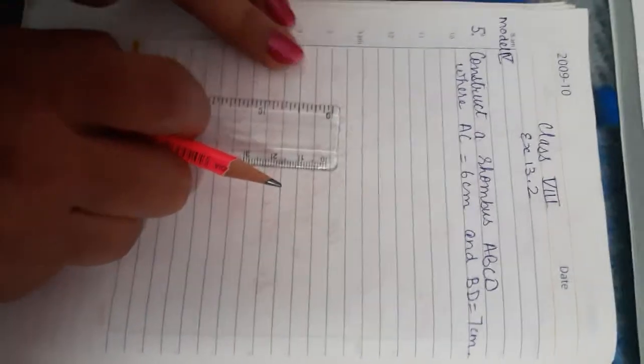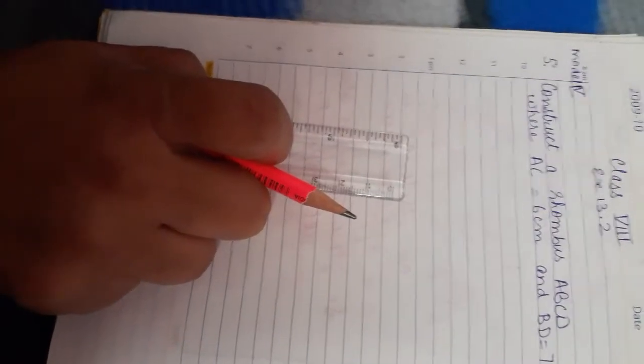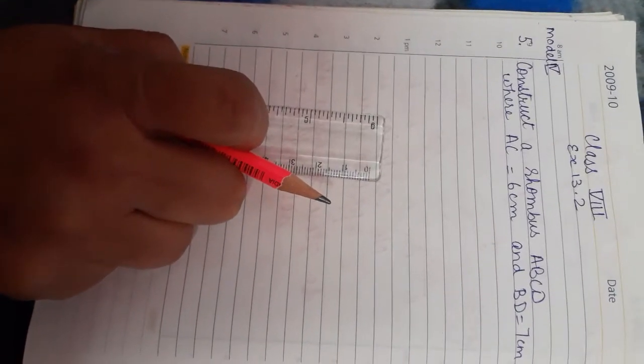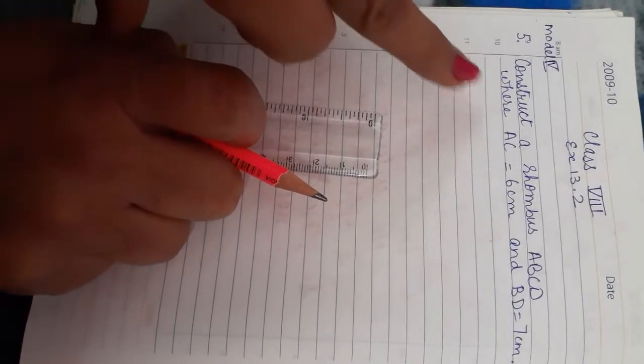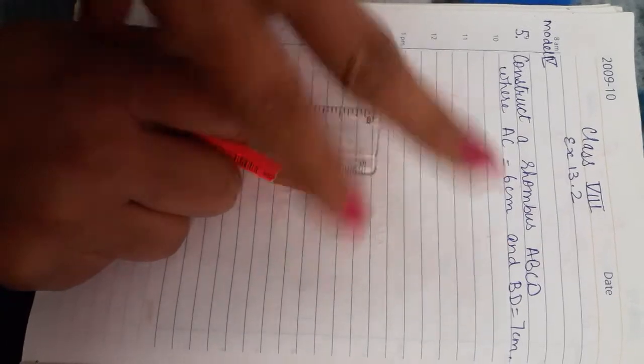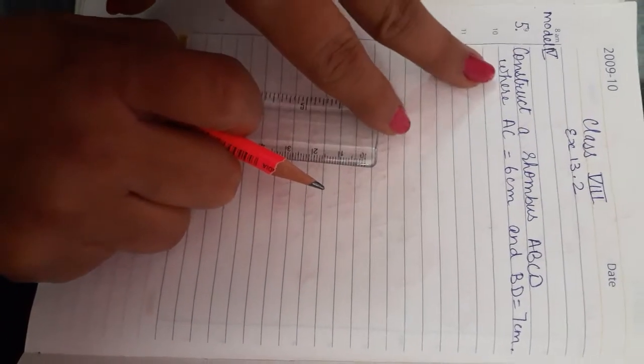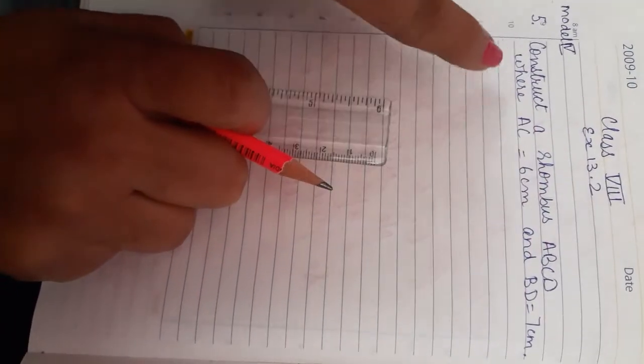Hello good morning students, today I am going to explain the next question from model exercise 13.2. How to construct a rhombus with two diagonals. See the question: construct a rhombus ABCD.